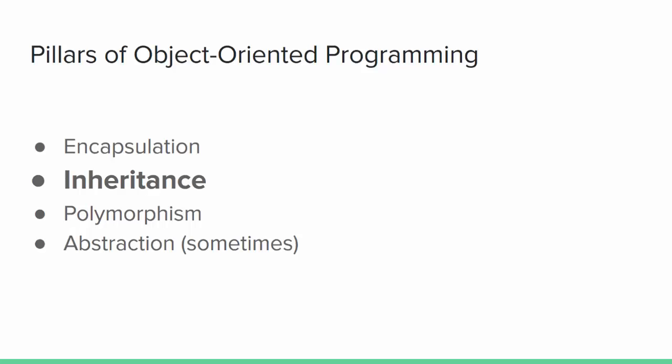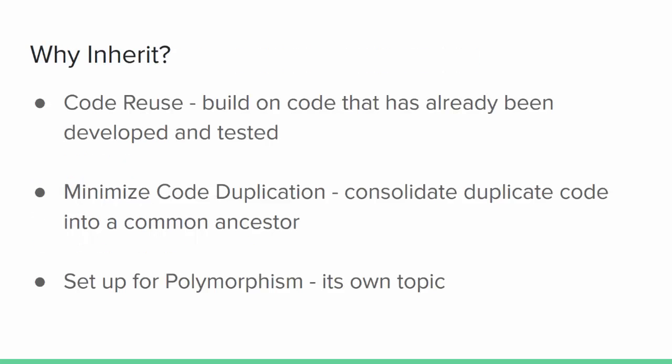Inheritance is one of the so-called pillars or big ideas of object-oriented programming. I'm assuming at this point that you've already written some classes and you're familiar with encapsulation — the idea that an object should have exclusive control of its own data and expose only a limited public interface to the outside world. In object-oriented programming, a class can inherit the properties and methods of a previous class, something that already existed.